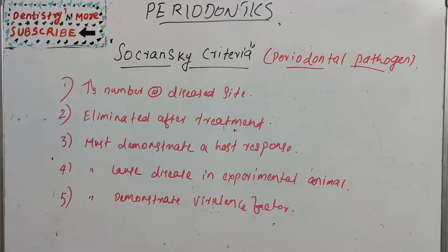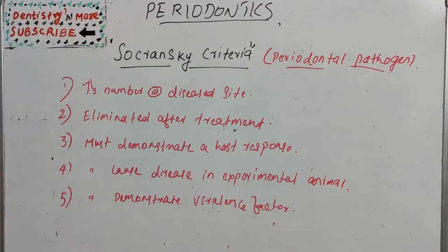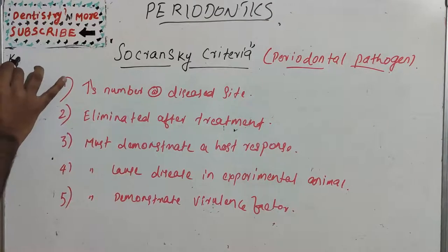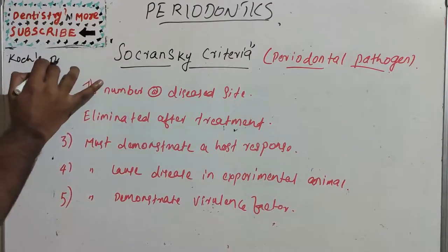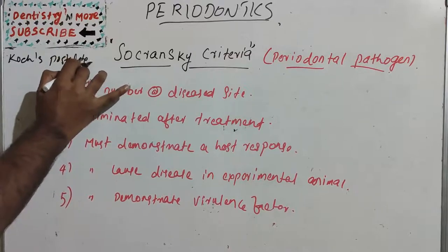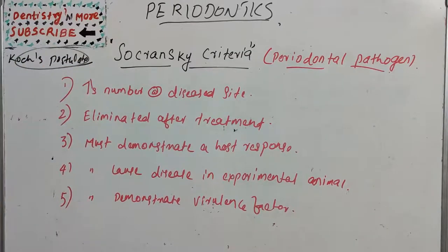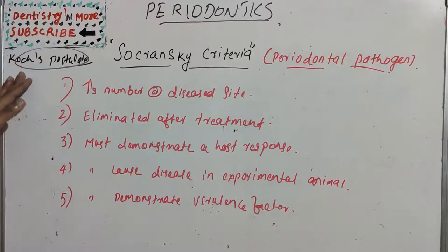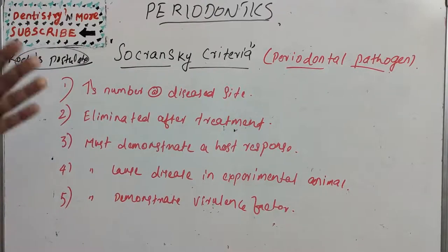Moving on to Socransky criteria: if a group of bacteria or microorganisms is to be named as a pathogen, it should follow five principles. We have heard similar principles before in the famous Koch's postulates from the late 19th century. Socransky criteria are similar to Koch's postulates but applied differently, specifically to periodontal pathogens.